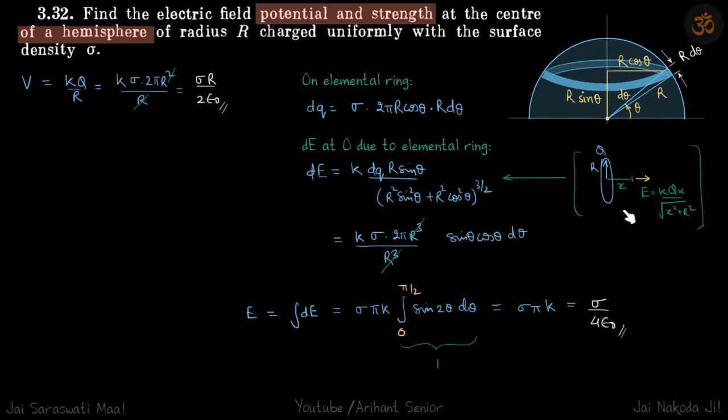Now, the small electric field at the center due to this ring - we're going to use this formula. At distance x, field is kQx/(x² + r²)^(1/2) due to a ring. Here, instead of r we put R cos θ, instead of x we put R sin θ, and instead of Q we put dQ.